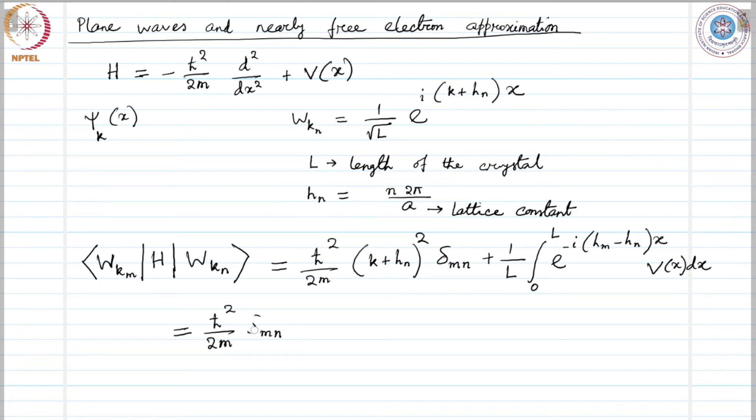Sorry, let me write that momentum first: k plus h n squared delta m n plus v h m minus h n.